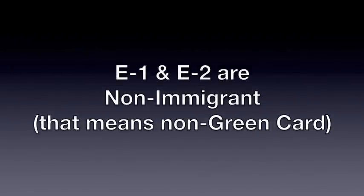It is not — and this is important — it's not an EB-5 investment green card. An EB-5 investment green card is what they call the million dollar or the half million dollar green card. E-1 and E-2 are non-immigrant, non-green card work categories. They are not the million dollar or half million dollar green card, the EB-5. That's a whole other topic for a whole other day.